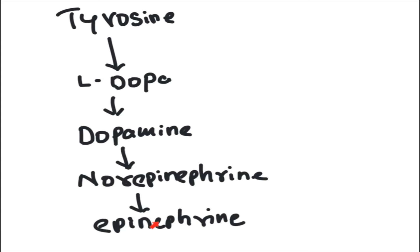The adrenal medulla and all neurons in the central nervous system that use epinephrine as a neurotransmitter will express all four enzymes in their cells.